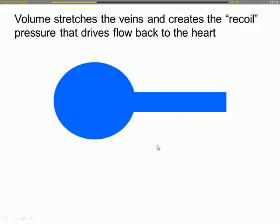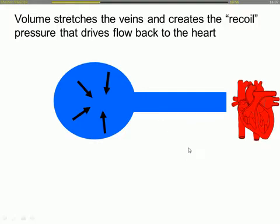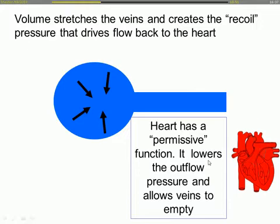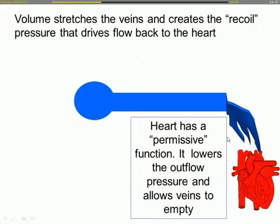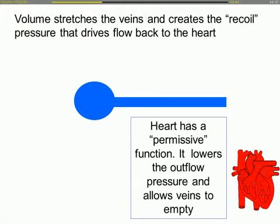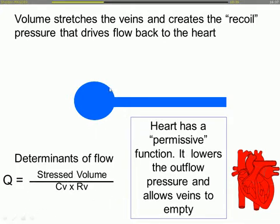With that background, let's get on to what happens with the heart and the lungs. But first I need a primer on how blood returns to the heart and how the heart deals with it. The model I like is an elastic balloon emptying through a resistance. The heart in this model is permissive — by lowering the downstream pressure, it allows that balloon to empty. You fill the vasculature, which is an elastic balloon with a recoil pressure, and the heart lowers the pressure to allow it to empty. The determinants of flow are how much you filled it above resting volume — the stressed volume — how stretchy it is (the compliance), and the downstream resistance.